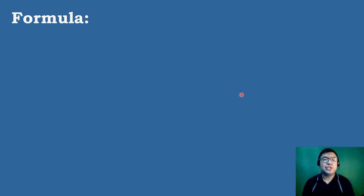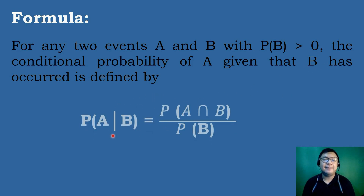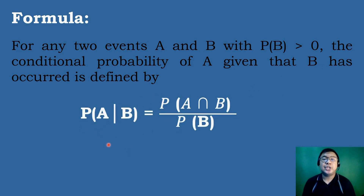To solve for conditional probability, this is the formula that we will be using. For any two events A and B with probability of B greater than 0, the conditional probability of A given that B has occurred is defined as: the probability of A given B equals the probability of A intersection B, all over the probability of B.